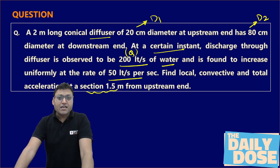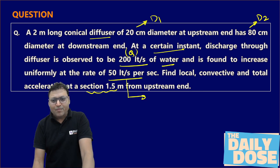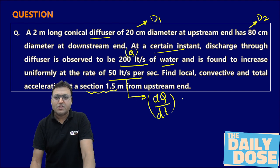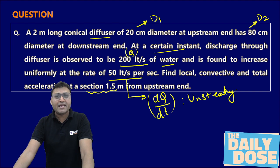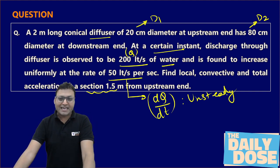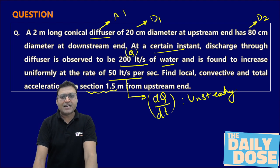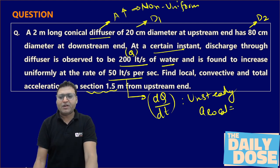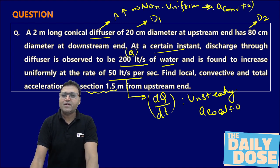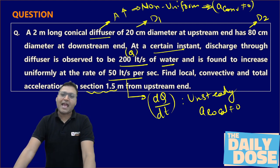We need to find the local, convective, and total acceleration at a distance of 1.5 meters from the upstream end. The fluid is unsteady because Q varies with time — the velocity varies with time since the area cannot change with time. And because it is a diffuser the area is continuously increasing, so the flow is non-uniform also. Therefore local acceleration and convective acceleration will both be developed.